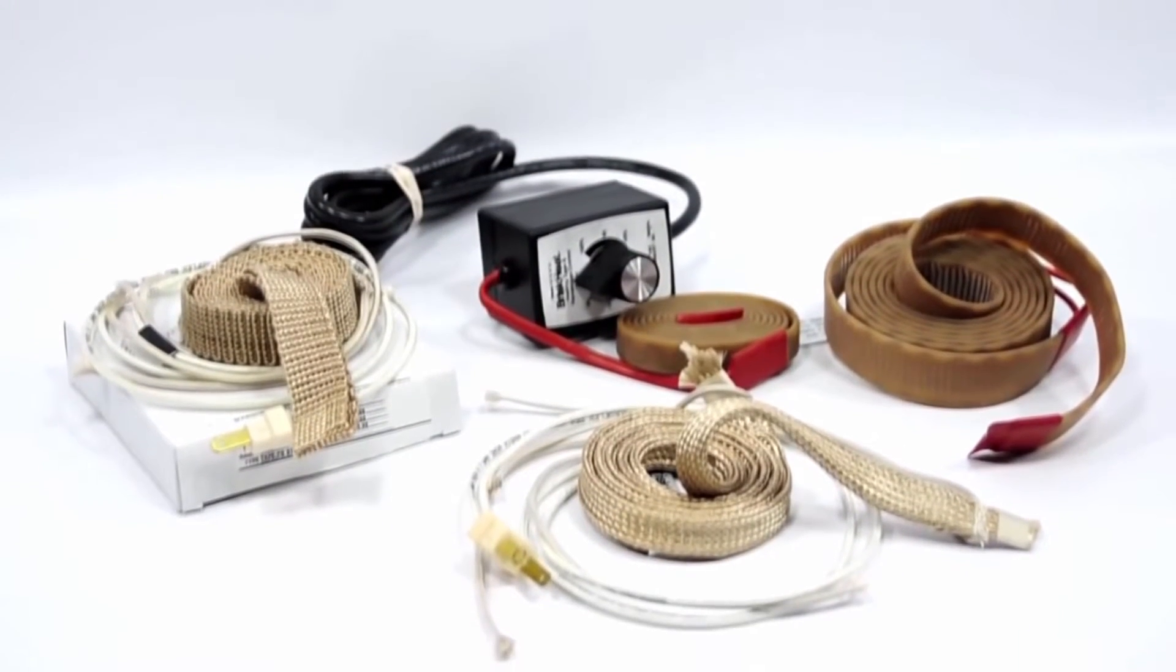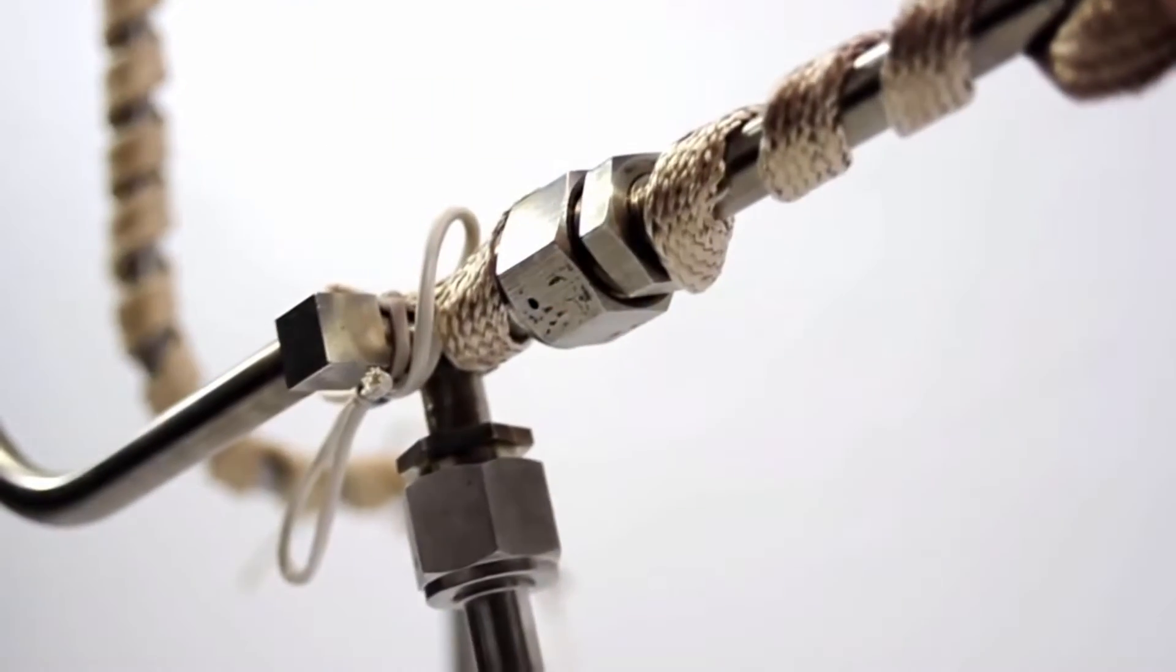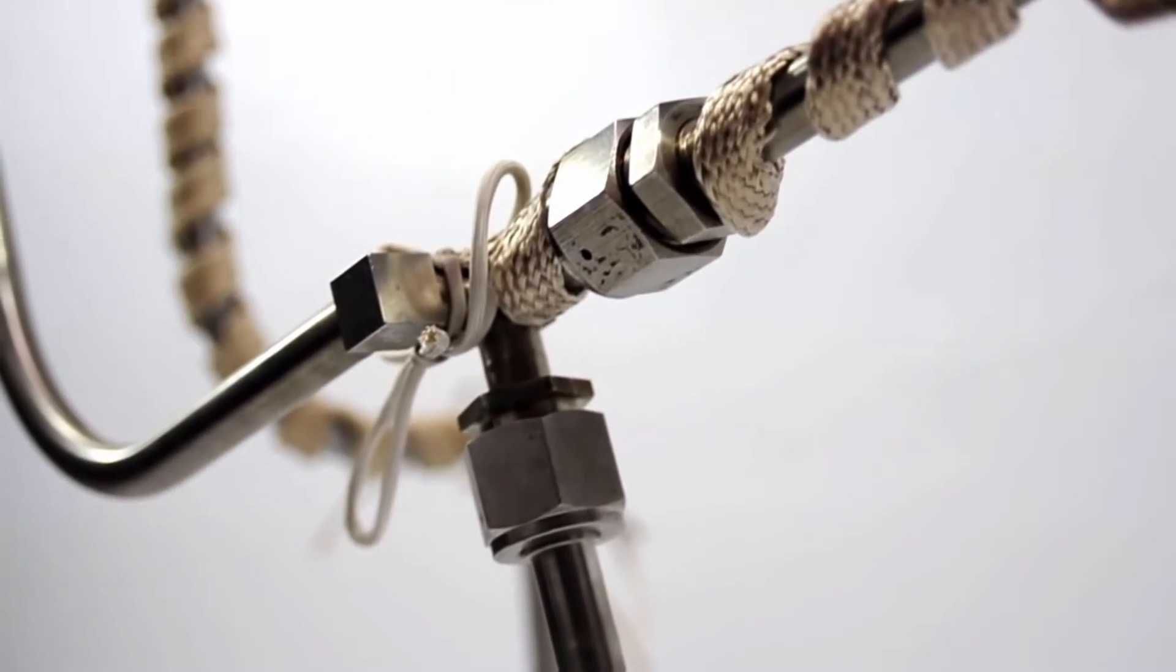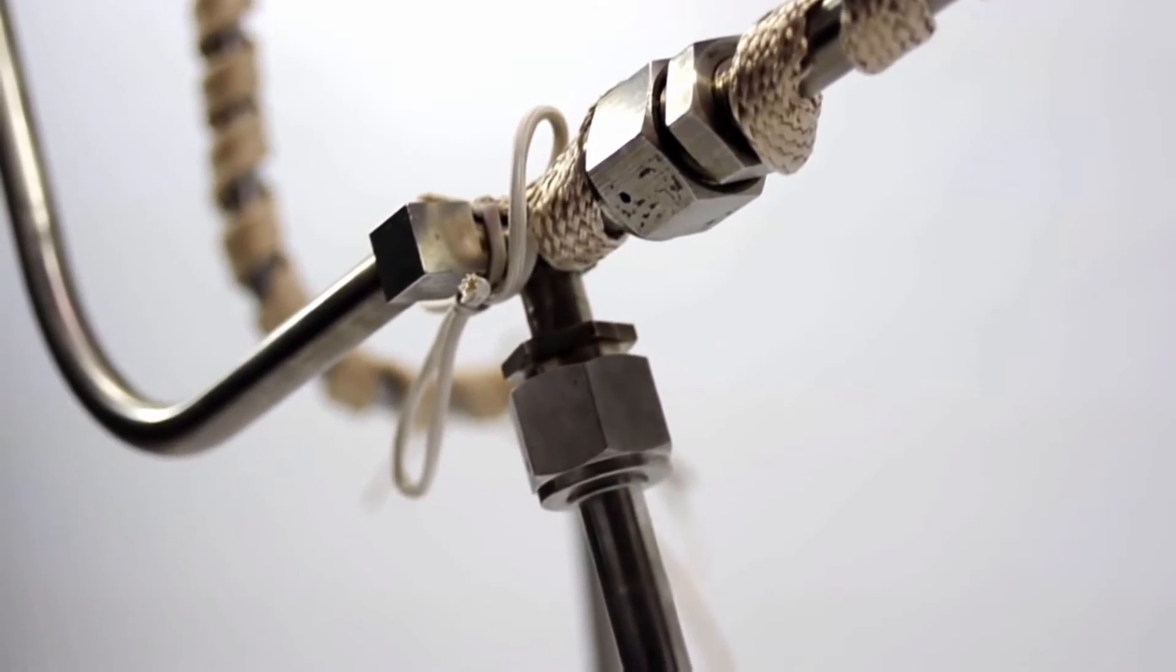To begin, there are three basic types of heating tapes. Heavy fiberglass insulated heating tape is equipped with high temperature tie downs and has a maximum temperature exposure up to 1400 degrees Fahrenheit or 760 degrees Celsius.